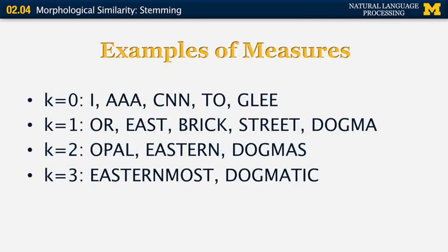Let's look at a few examples of measures. The first set shows five examples where K equals zero. For instance, the word 'two' has a consonant followed by a vowel, not vowel followed by consonant, so it has a measure of zero. The same applies to 'glee', which has consonants followed by vowels. For K equals one, 'or' is a vowel followed by a consonant, 'east' is vowels followed by consonants, and 'street' starts with an optional consonant then vowels and consonants — all matching K equals one.